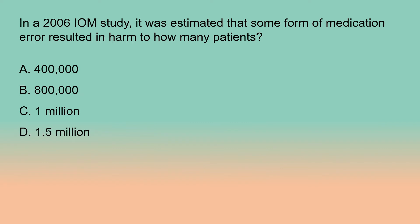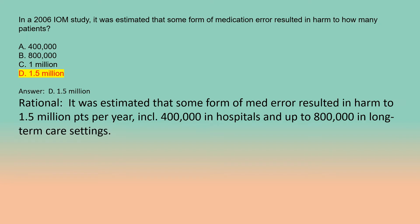In a 2006 IOM study, it was estimated that some form of medication error resulted in harm to how many patients? A. 400,000. B. 800,000. C. 1,000,000. D. 1,500,000. Answer: D. 1,500,000. Rationale: It was estimated that some form of medication error resulted in harm to 1,500,000 patients per year, including 400,000 in hospitals and up to 800,000 in long-term care settings.